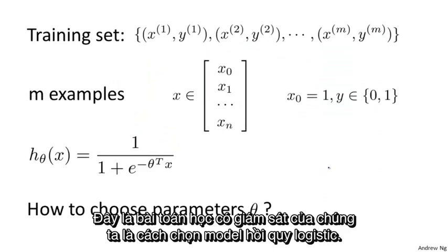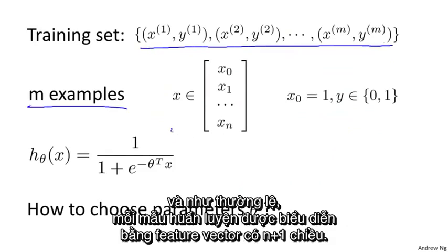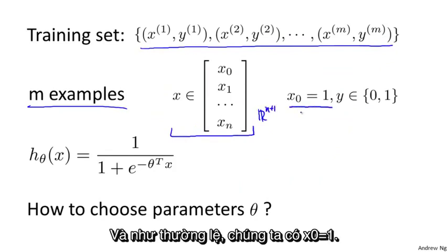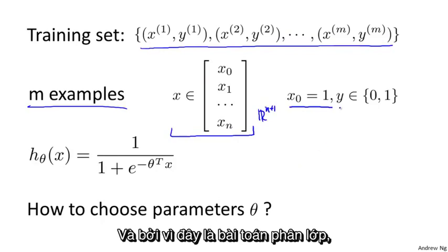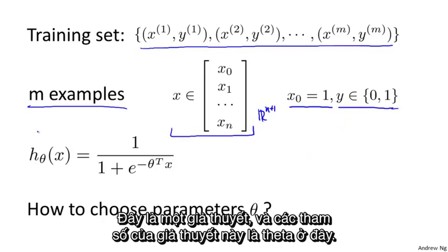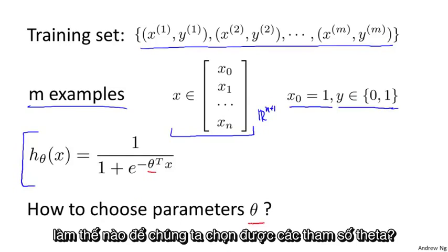Here's the supervised learning problem of fitting a logistic regression model. We have a training set of m training examples, and each of our examples is represented via a feature vector that's n plus 1 dimensional. We have x0 equals 1, so our 0th feature is always equal to 1. And because this is a classification problem, every label y is either 0 or 1. The parameters of the hypothesis are theta, and the question is: given this training set, how do we fit the parameters theta?